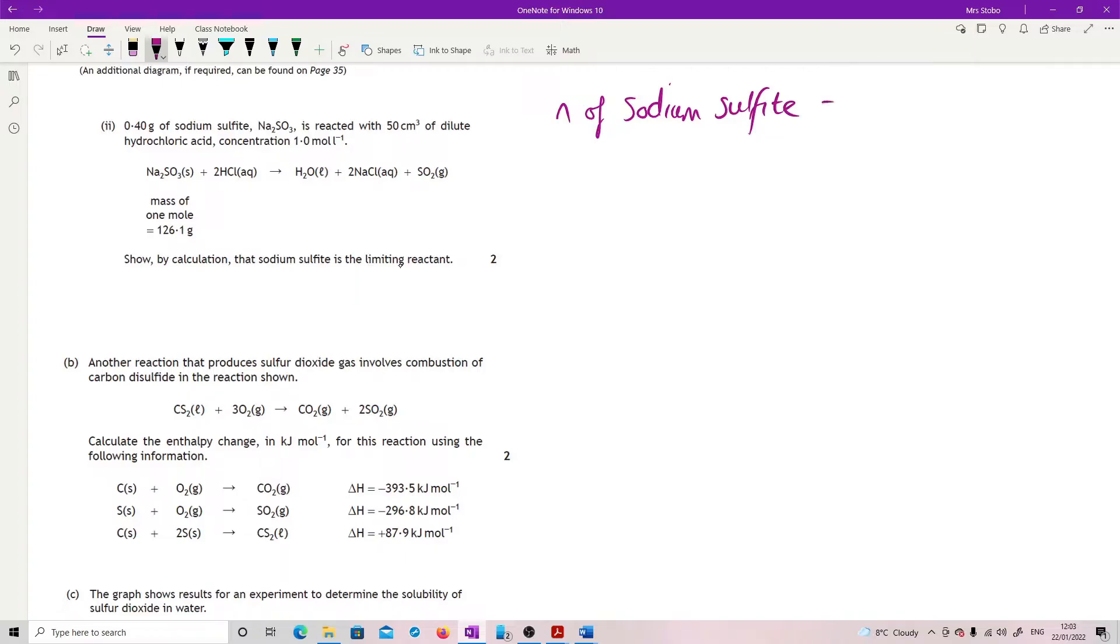So we have, we've got a mass and we've got the mass of one mole. You don't even have to go and do the formula mass calculation for this one. So moles is mass divided by formula mass. So 0.4 divided by 126.1 means that the moles of sodium sulfite I have is 0.003. Go to my balanced equation and I know that my sodium sulfite to hydrochloric is a one to two. So if I have 0.003 I need 0.006, that would be my requirement.